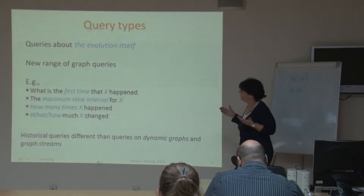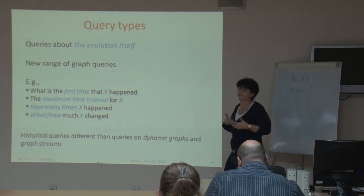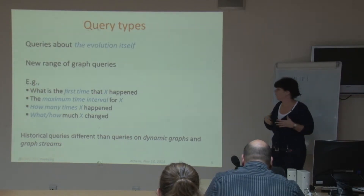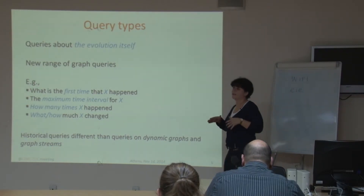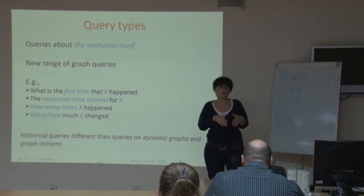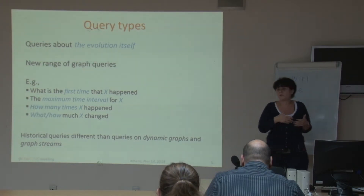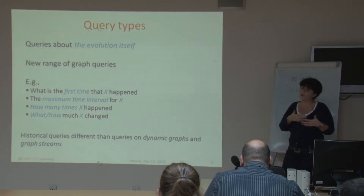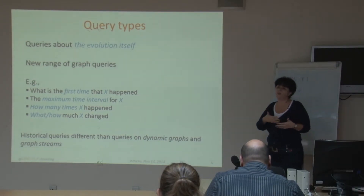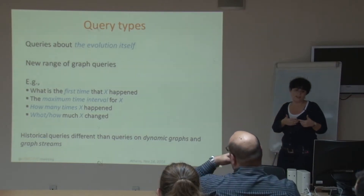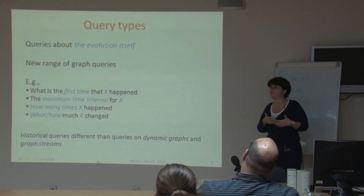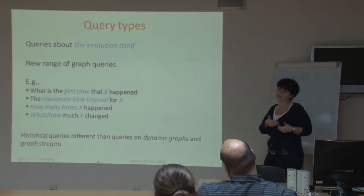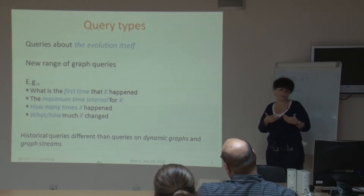One can think of a new range of such graph queries on the evolution of graphs. Historical queries are different than queries on dynamic graphs — in dynamic graphs, graphs change and we have queries on graphs that change, but we just want results applicable to the current snapshot. They are also different than graph streams, because in streams we assume storage is limited, whereas here we have all past snapshots stored.